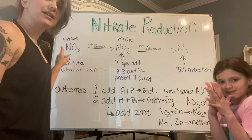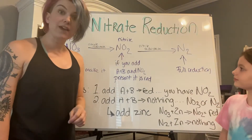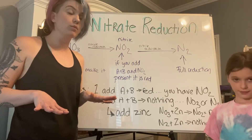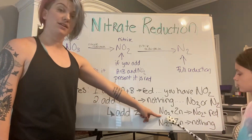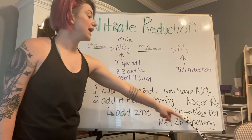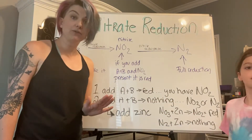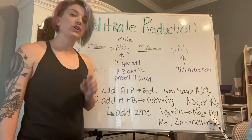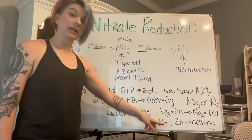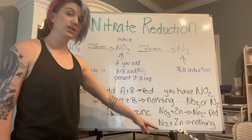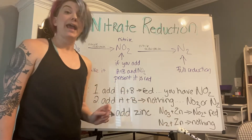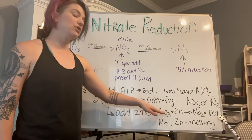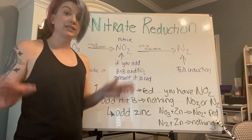Zinc dust will force the reaction — it will convert nitrates into nitrites. So if you add zinc dust and you still have nitrates in the tube, those nitrates will combine with the zinc and turn into NO2, and since you've already added reagents A and B, the tube will turn red. If you add zinc dust and nothing happens, it means you've done complete reduction — you have molecular nitrogen in the tube, and it only turns red if NO3 was still present.